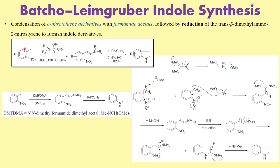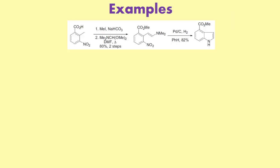The substrates you start with and the indole you end up getting — here is a representative example. They started with a particular ortho-nitrotoluene derivative. Using sodium bicarbonate as a weaker base to form the carboxylate, then methylated to convert the acid to an ester derivative. The next step is treatment with DMF-DMA under heat, which gives the nitrostyrene intermediate. Hydrogenation under standard conditions gives the indole. You should know in the exam that an ortho-nitrotoluene derivative on reaction with these reagents gives the indole.